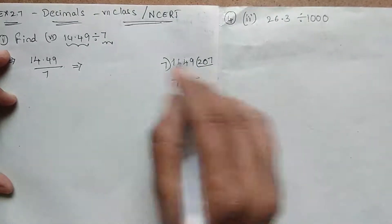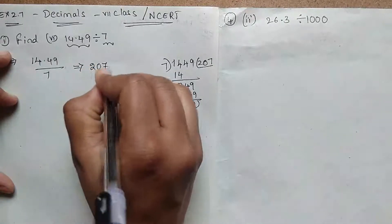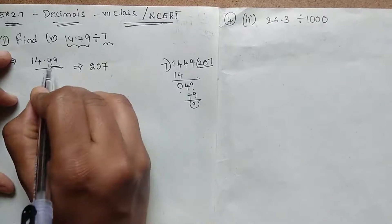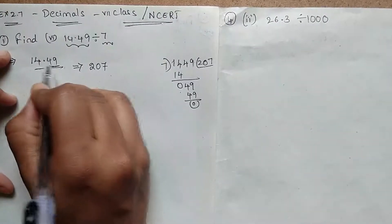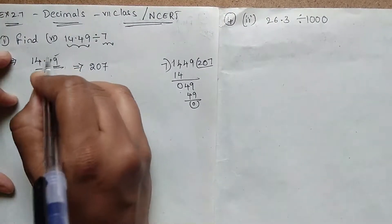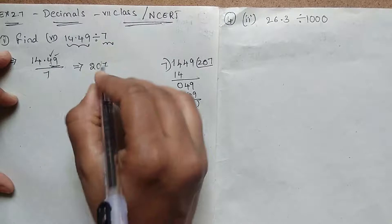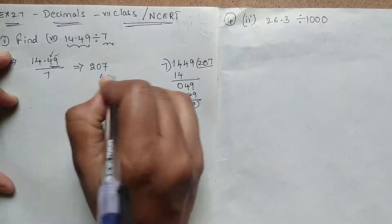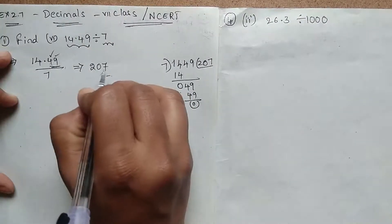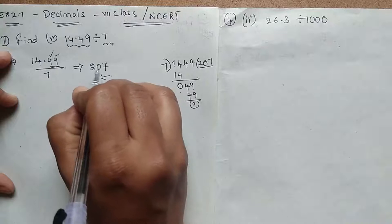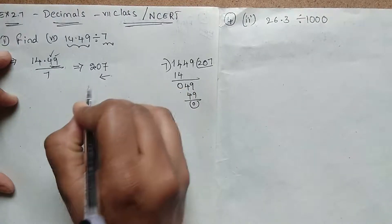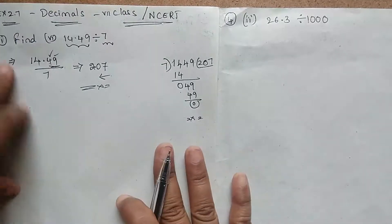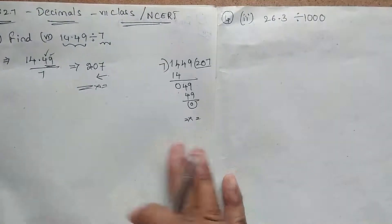So 207 looks like the answer, but it's not the final answer because we have decimals in the numerator. How many decimal places? It is in the hundredths place — so we have to place the decimal point from the right, two places: 1, 2. So we keep it like this — 2.07 — this is the answer, this is the division for this question.